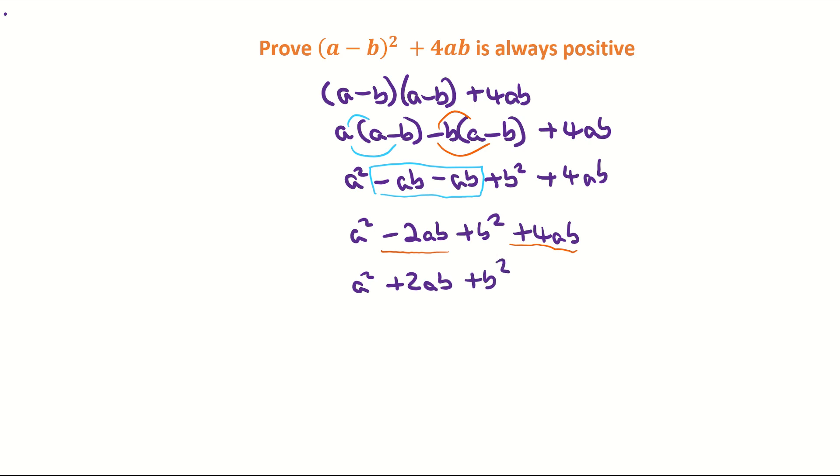Now the question wants us to show that this is always positive. So what I'm going to do is open up this 2ab. I'm going to rewrite the 2ab as 1ab + 1ab. So a² + 1ab + 1ab + b². I'll show you the reason for that now is that I'm factorizing by grouping.